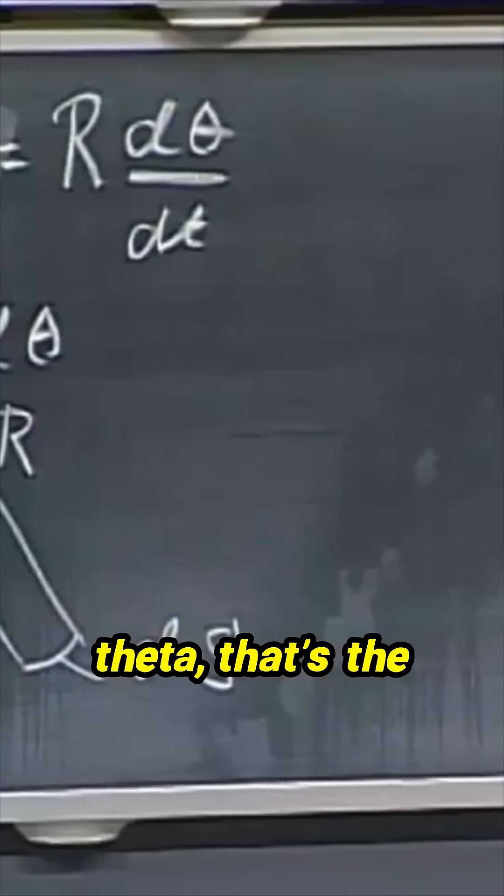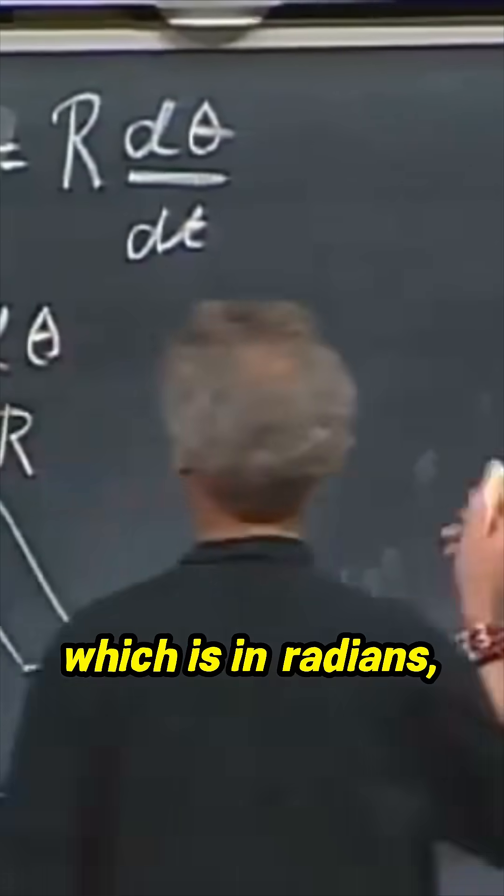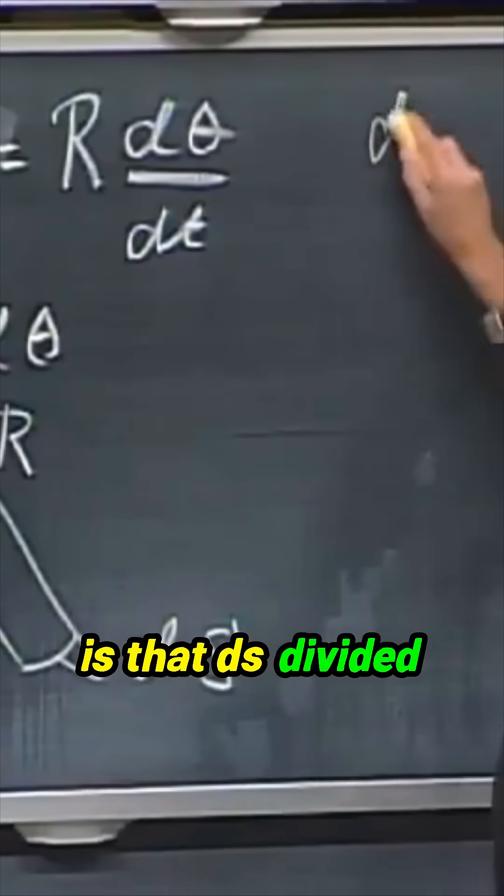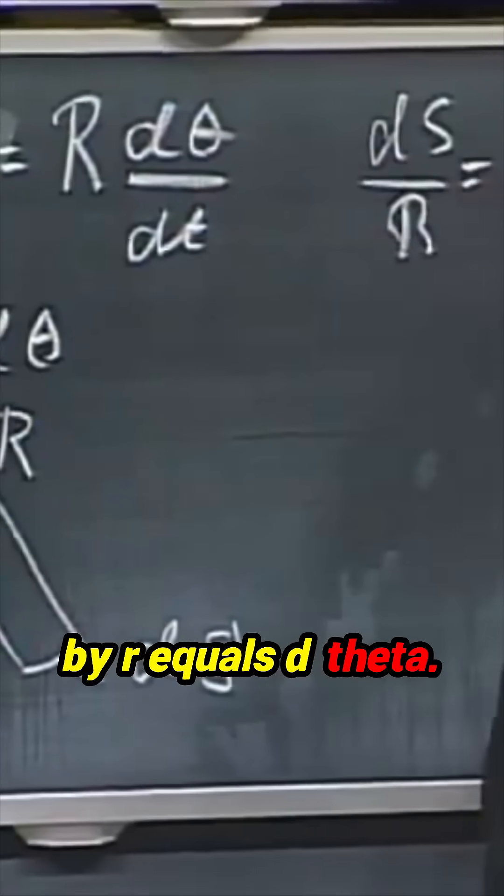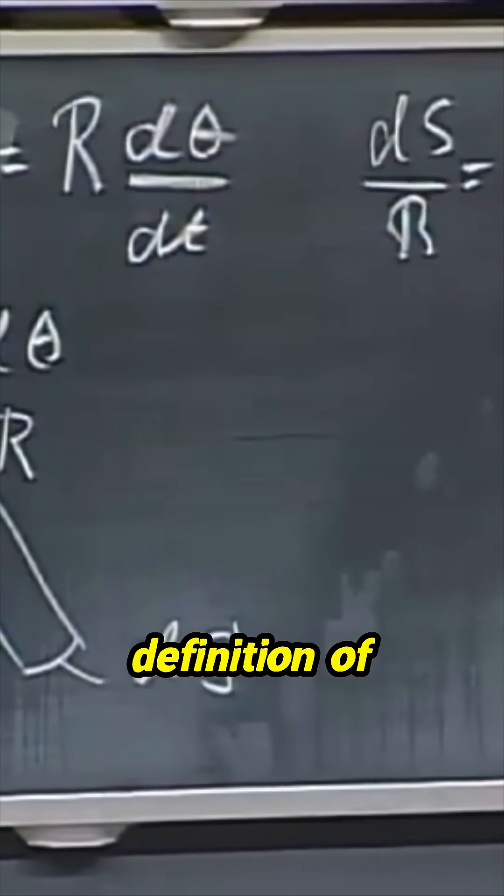The definition of theta, that's the definition of theta, which is in radians, is that ds divided by r equals d theta. That's our definition of radians.